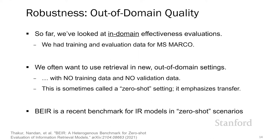So far we've looked at in-domain effectiveness evaluations — cases where we had training and evaluation data for the IR task at hand, which was MS-Marco. But we often want to use retrieval in new out-of-domain settings, throwing our search engine at a difficult problem without training data or validation data. We briefly discussed BEIR before, which is a recent effort to test IR models in a zero-shot setting, where models are trained on one IR task, fixed, and then tested on a completely different set of tasks. BEIR includes 17 IR datasets across nine different IR tasks.